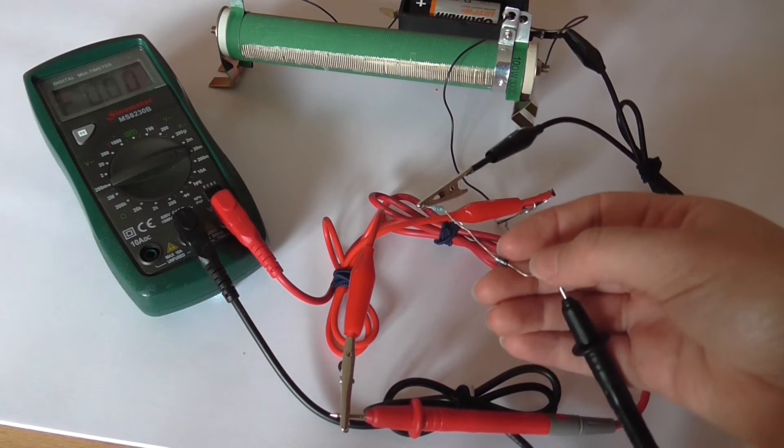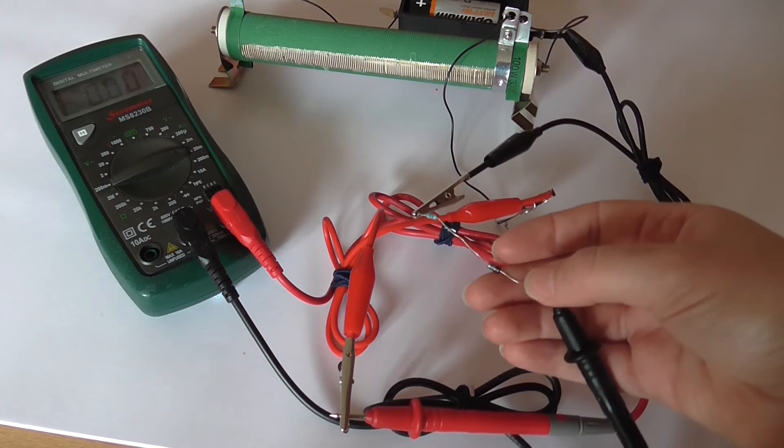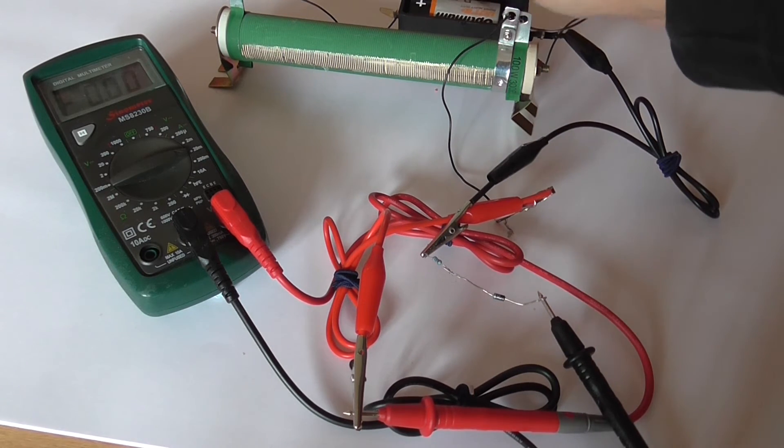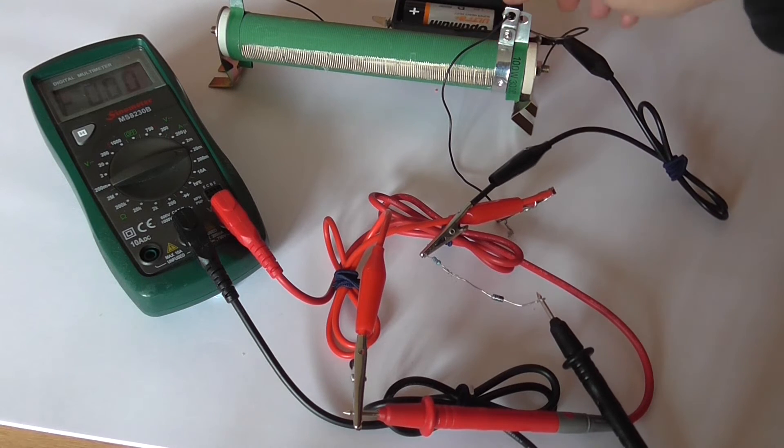With the diode, it's very important that we get it the right way round. This is the negative terminal of the battery. And you can see that that runs to the cathode.